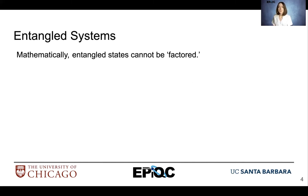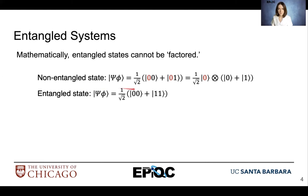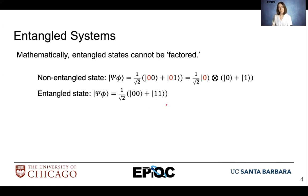Mathematically, an entangled state cannot be factored. Here we have a non-entangled state: 1 over square root of 2 times ket-00 plus ket-01. We can see that both of these basis values within the quantum state have a zero as the first qubit value. Because of that, we can factor it out. An entangled state, however, you cannot factor out any components of the state — you have to treat it as one uniform system.